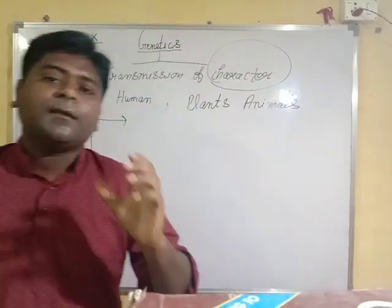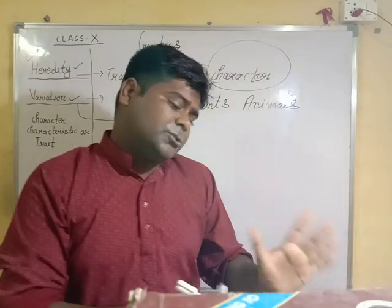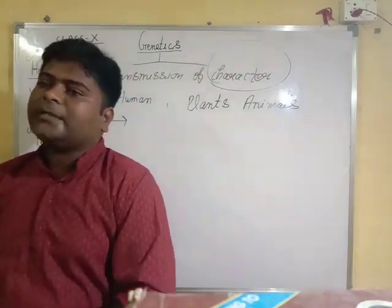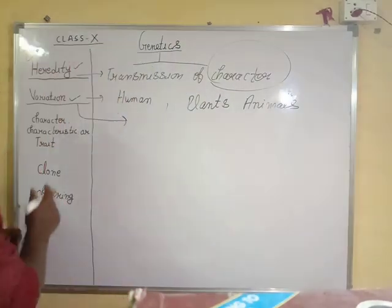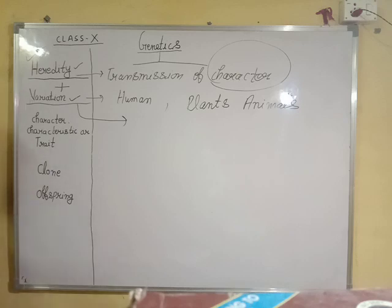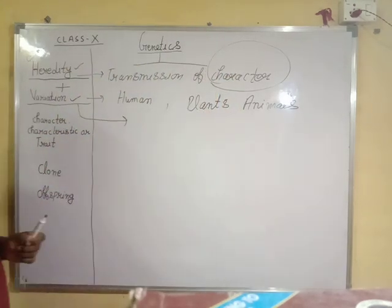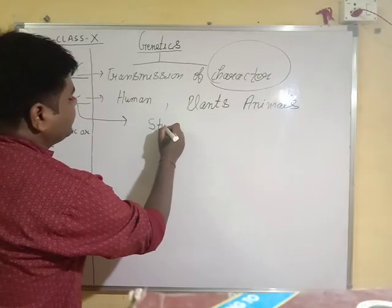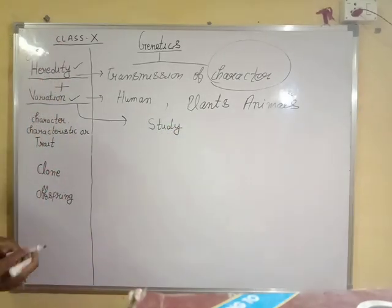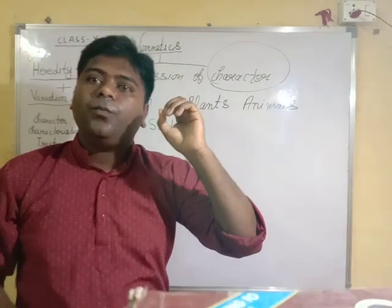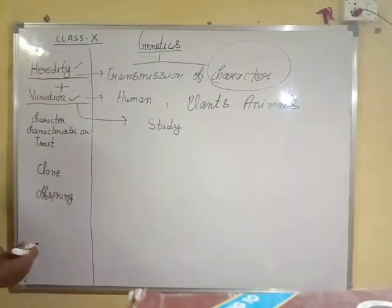Differences among individuals is known as variation. Differences among a population is also known as variation. So when we include these two terms — heredity and variation — we get the definition of genetics: the study of heredity and variation is known as genetics.